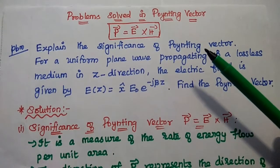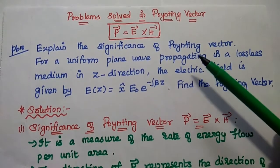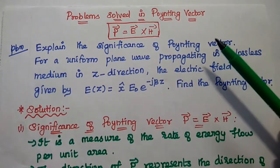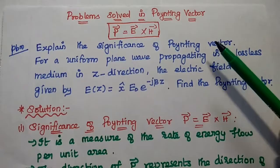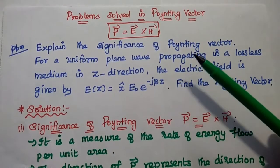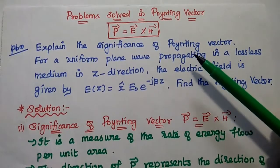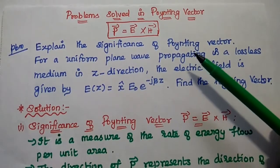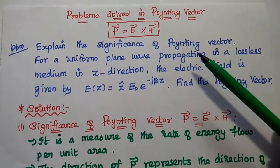Dear students, now we are going to solve one important problem on the Poynting vector. The Poynting vector is the cross product of the electric field and magnetic field density.